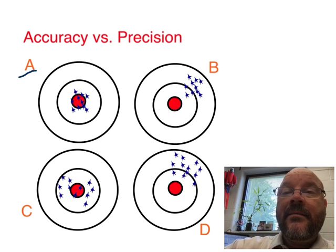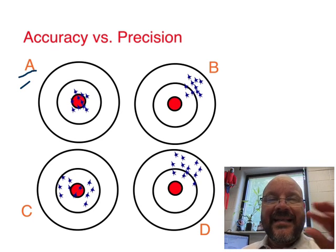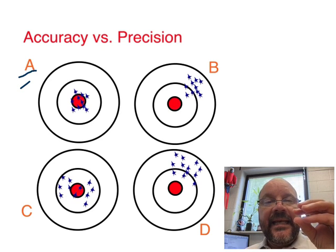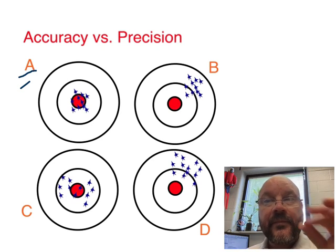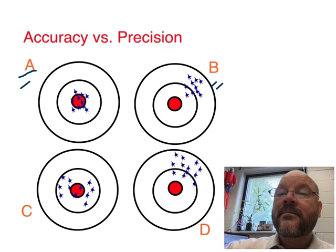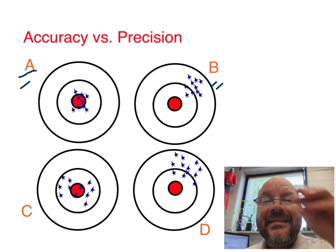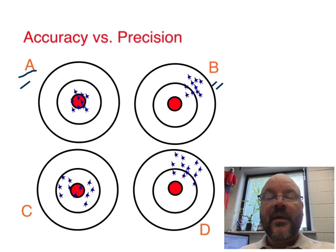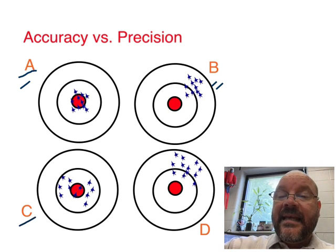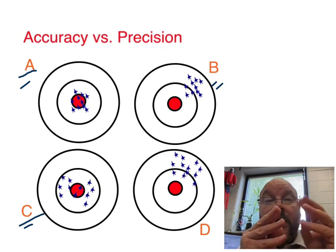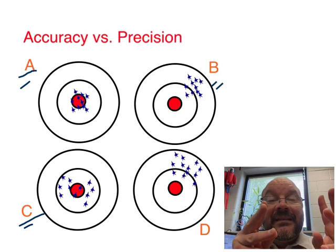So in example A, things are nice and tight. The data is all in a bunch and it is on target. Over here B, it's tight, it's in a bunch, but it's not where it ought to be. It's moved somewhere else. In C, that is on target, but it's all kind of spread out.